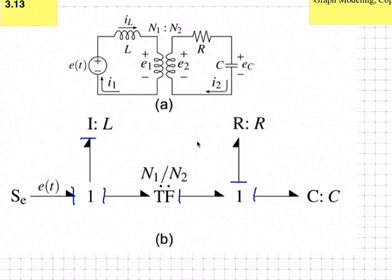Now we want to identify the efforts and flows on the energy storing elements. For an inductor, the effort is the time rate of change of the flux linkage. The flow will be the current, which is the flux linkage divided by the inductance. For a capacitor, the flow will be the time rate of change of charge, which is a current, and the effort will be the charge divided by the capacitance, which is the voltage.